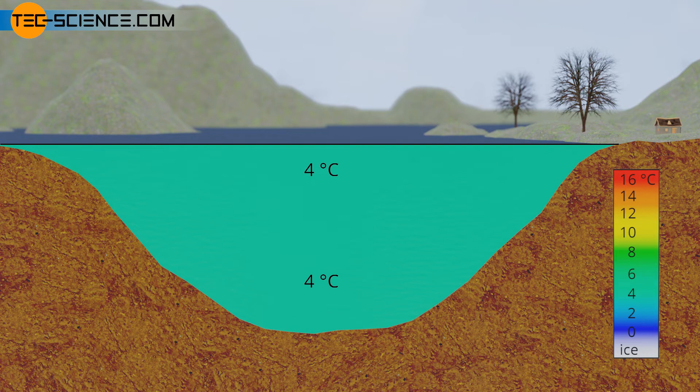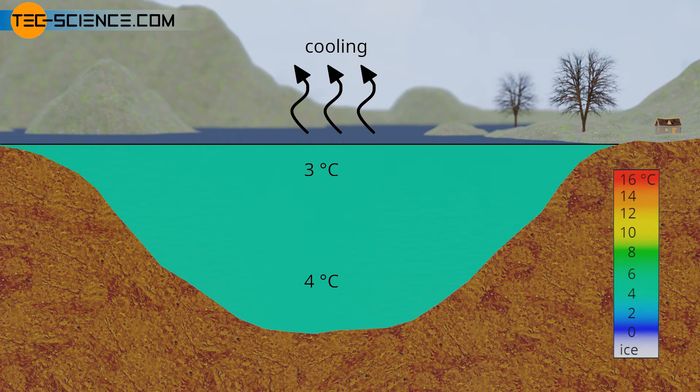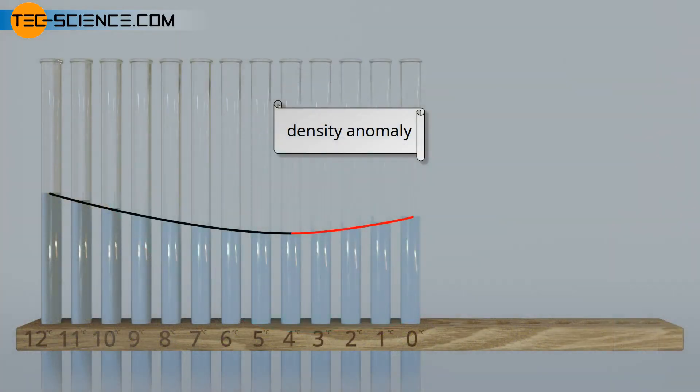If the cold water of 4 degrees Celsius continues to cool down further in winter, the colder layers will no longer sink to the ground. Because due to the thermal negative expansion, those cooler layers are lighter. In the temperature range between 4 degrees Celsius and 0 degrees Celsius, the colder the water, the lighter it will be. This is the actual density anomaly of water, since it no longer contracts but expands as it cools.